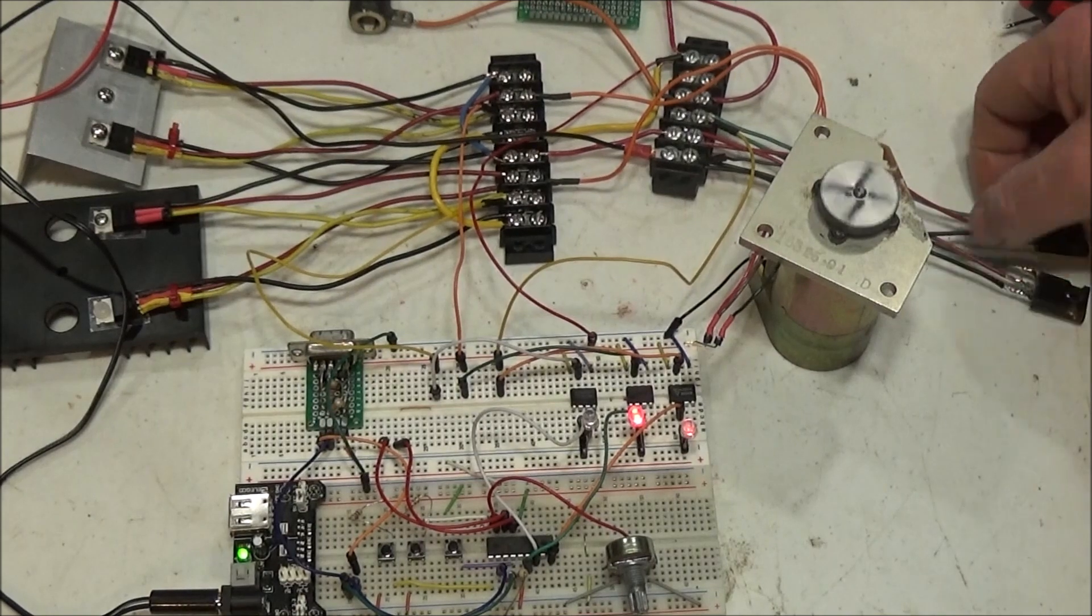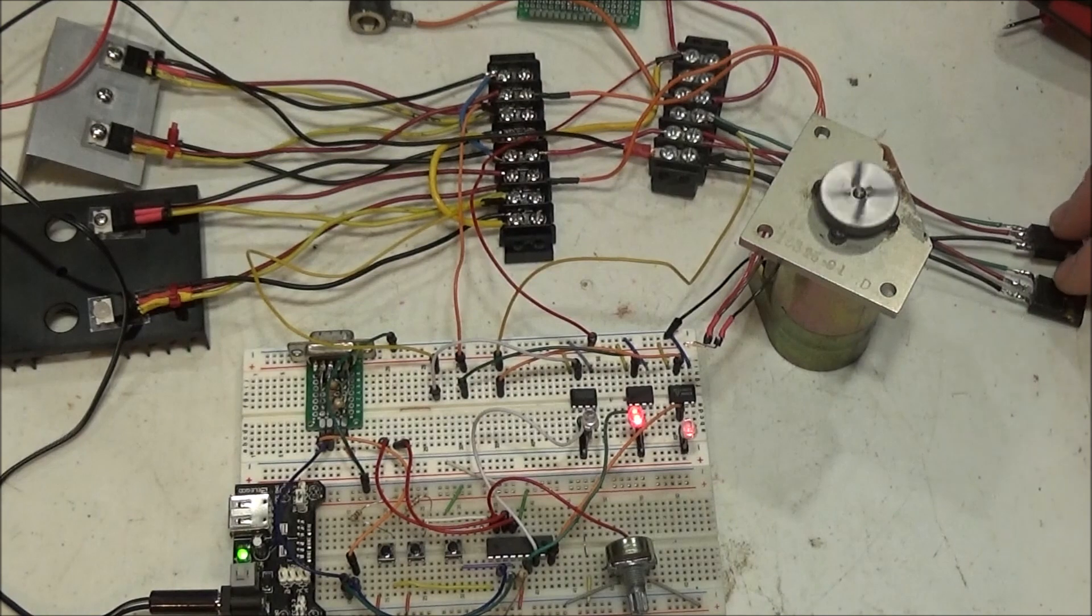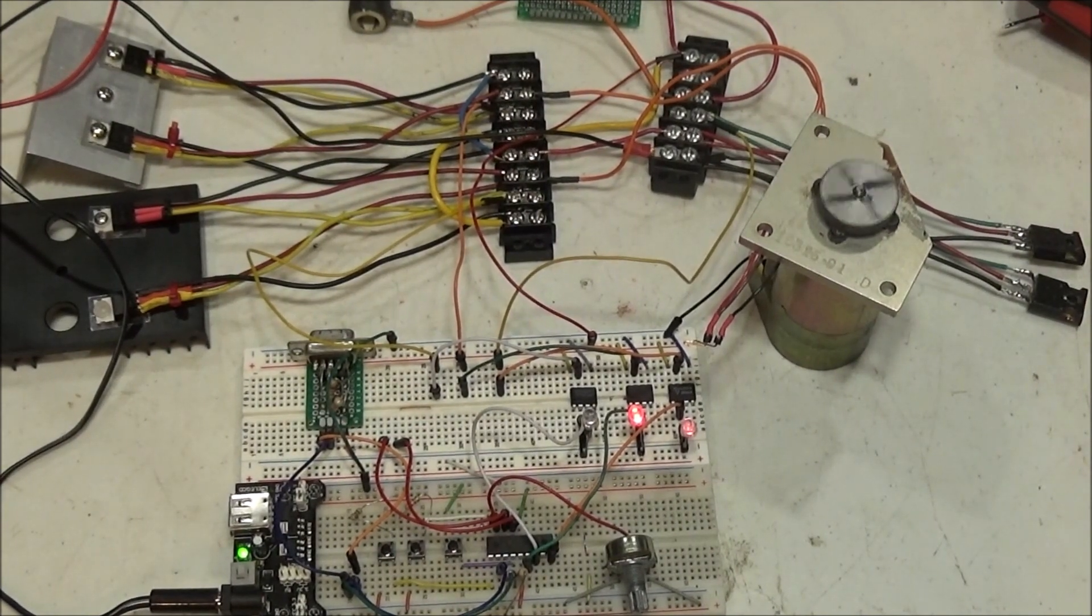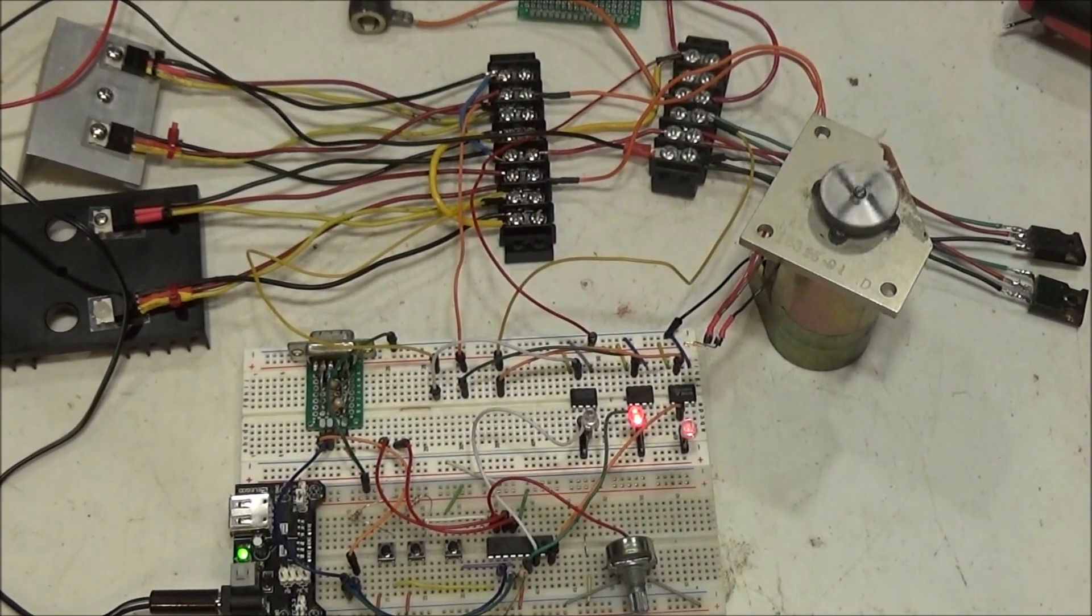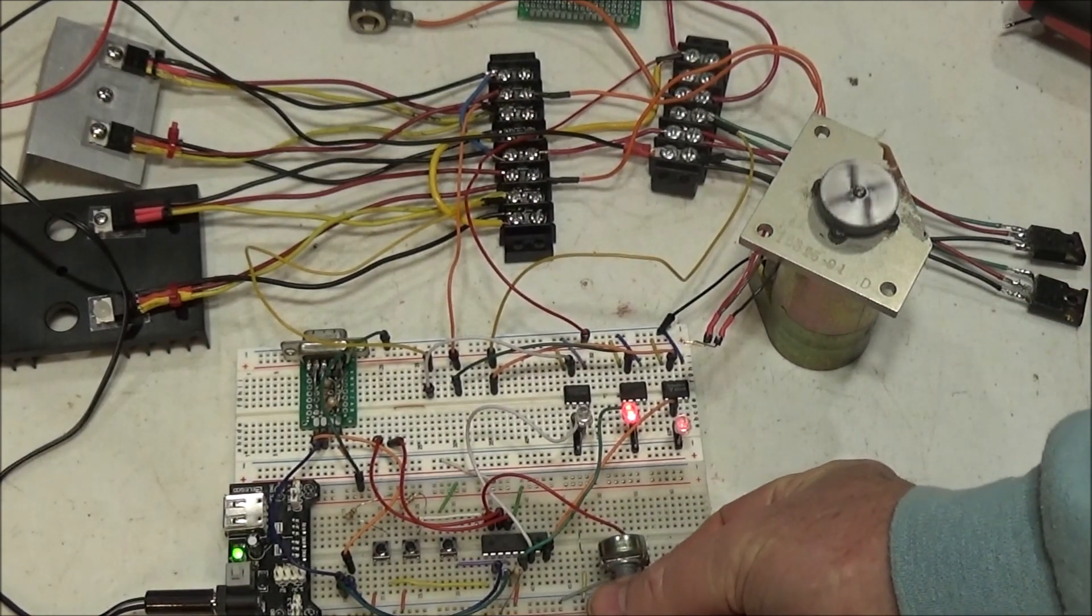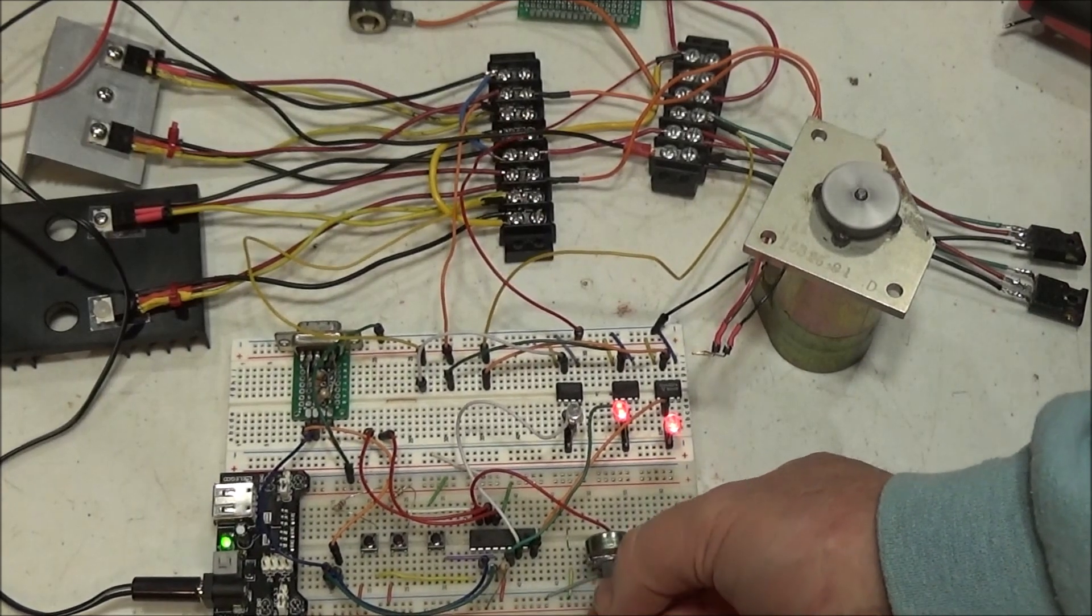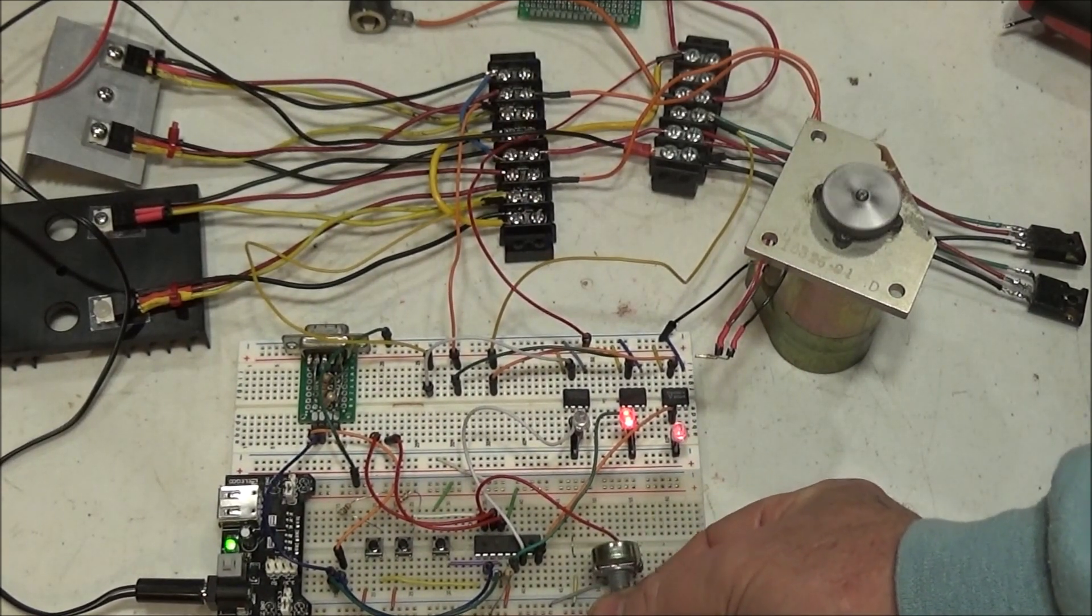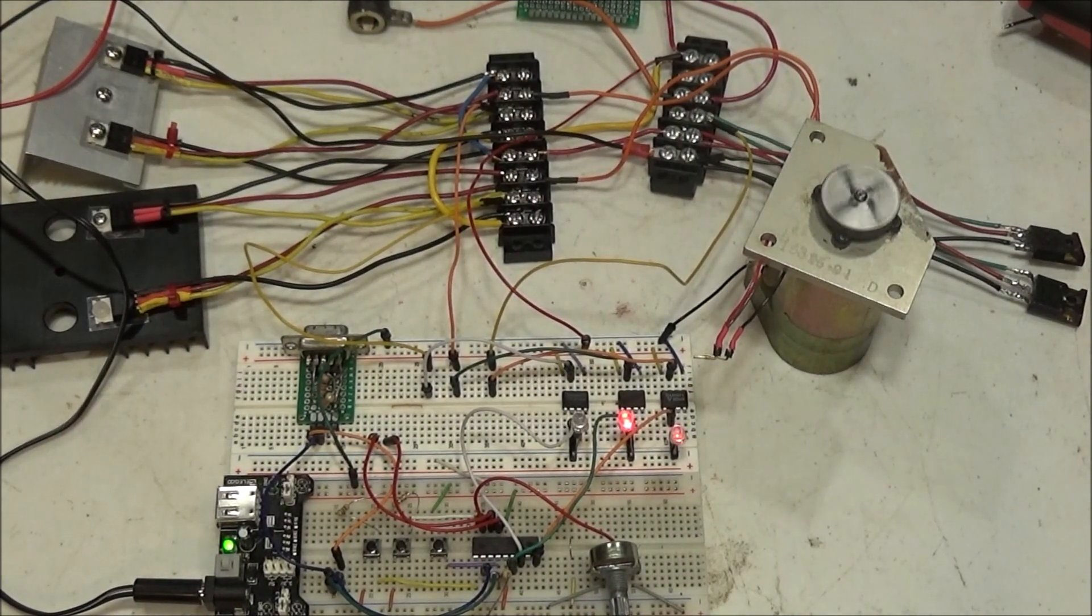You'll notice off to the side here, here are two parallel N-channel MOSFETs. That is what I use for speed control and enable. And that comes off this IC through pulse width modulation.